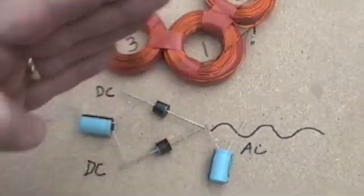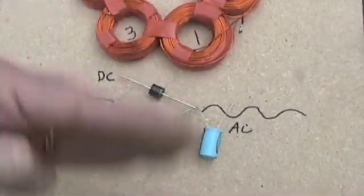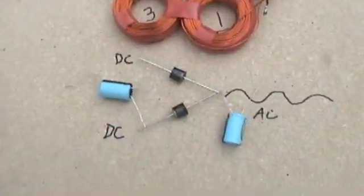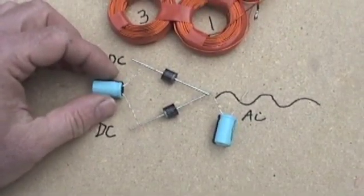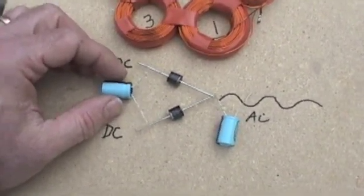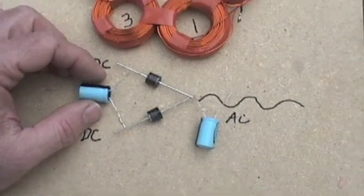So rather than having peaks of DC like this, you're going to get a much smoother DC. And you can use that then for your battery charging or directly to 12-volt applications.